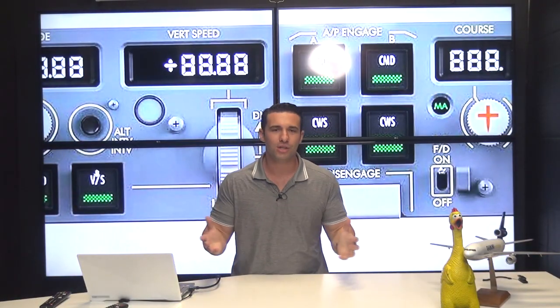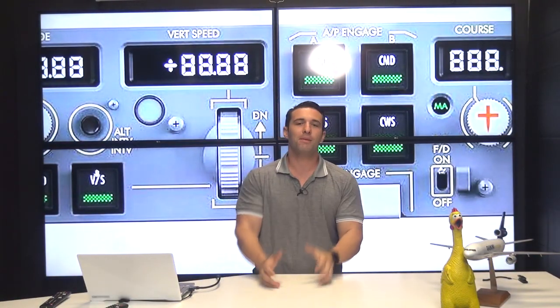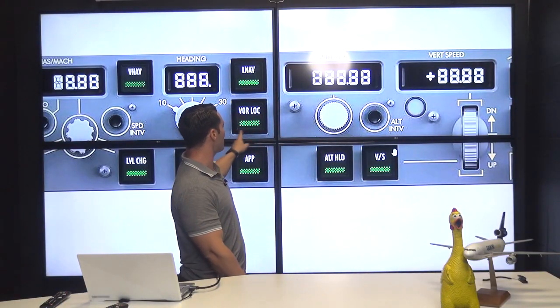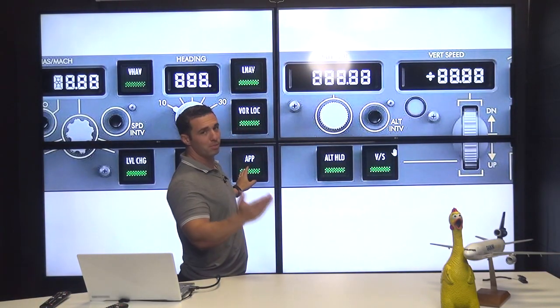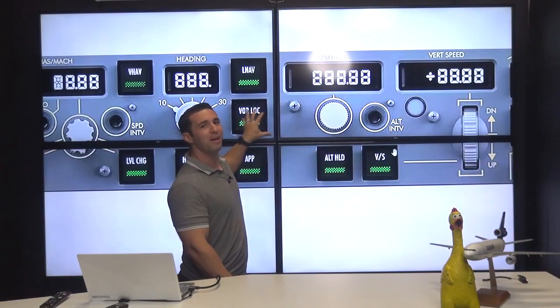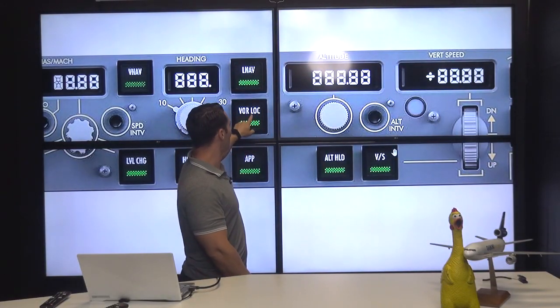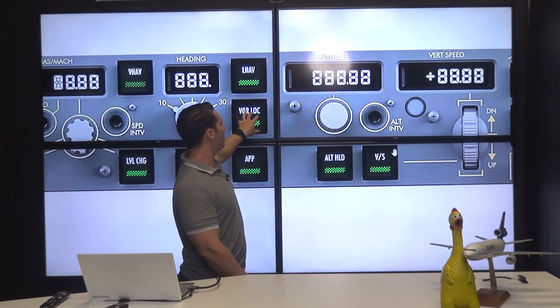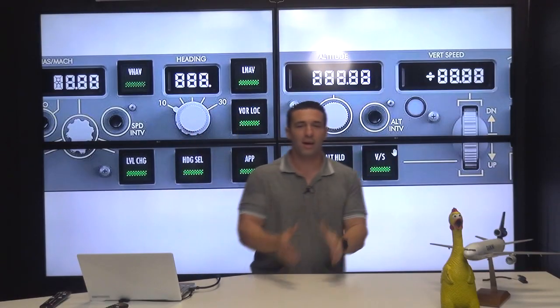Now why do we care, Joe? Who cares if it's the master on the left side or the right side? So here's the reason that it's relevant and that's because there's a little button here in the center that's called VorLock, right over here, as well as the approach mode push button. But really, ground-based navigation push buttons. VOR, localizer, and approach. The VorLock push button is going to track either a VOR or localizer. And what VOR or localizer will it track? It depends on the master flight director.